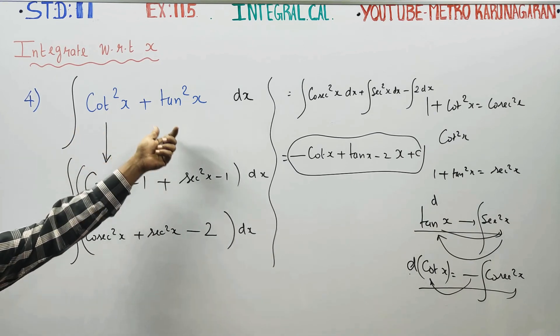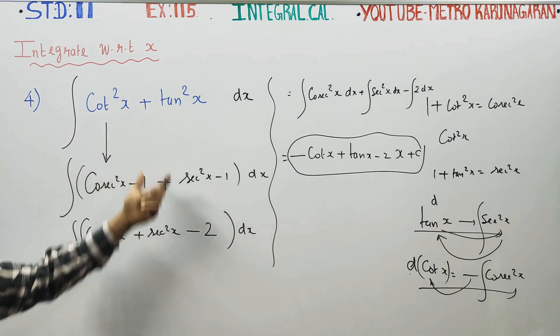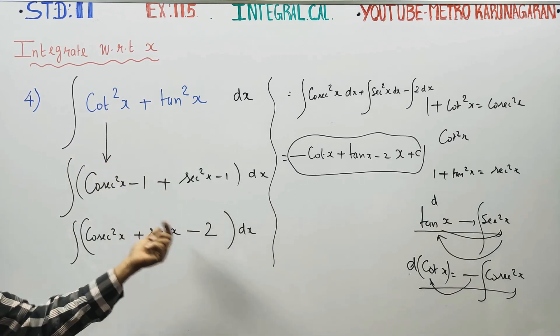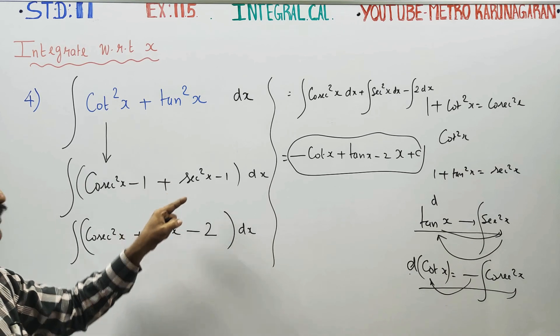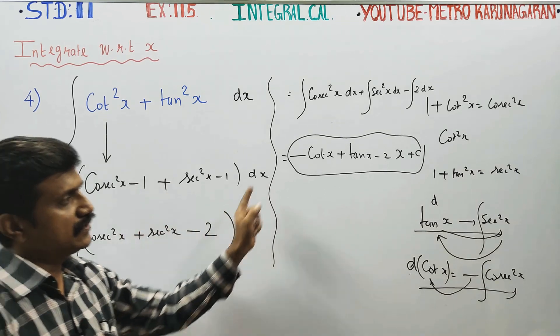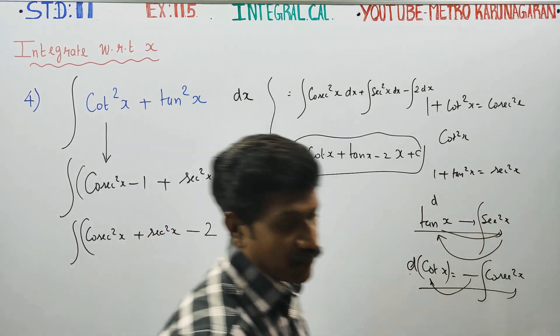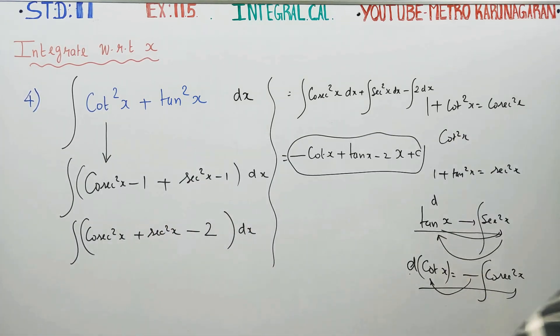Since cot square and tan square have no direct integration formula, we use trigonometric identities indirectly to come out of the problem. Thank you.